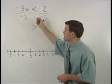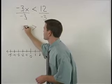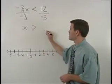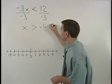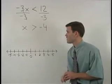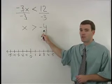On the left side, the negative 3s cancel and we're left with x. And on the right side, 12 divided by negative 3 is negative 4. So we have x is greater than negative 4.